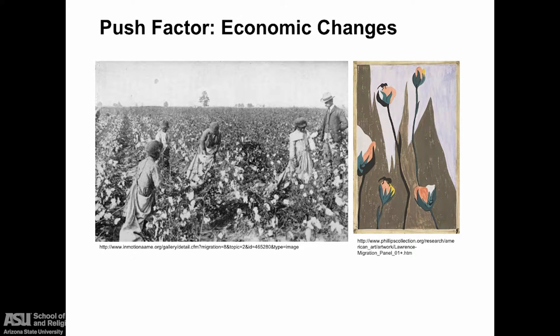Economic changes were also push factors. The boll weevil infestation started in 1898 in Texas, spread east, and the insects fed on cotton buds, devastating the cotton industry in the United States by the 1920s. When post-World War I international markets opened, U.S. growers faced stiff competition from imports.